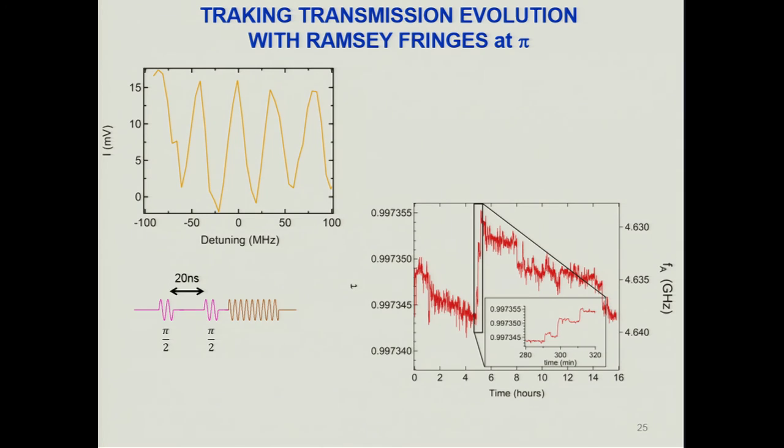A question arose about the origin of the small transmission fluctuations. An atom moving at the center would cause a large change in the first digit, but the observed changes are in the fifth digit. Simulations suggest that an atom moving about 10 atomic layers away from the central atomic contact would change the transmission by roughly this amount. What drives such atomic motion at very low temperatures remains unknown — just speculation.